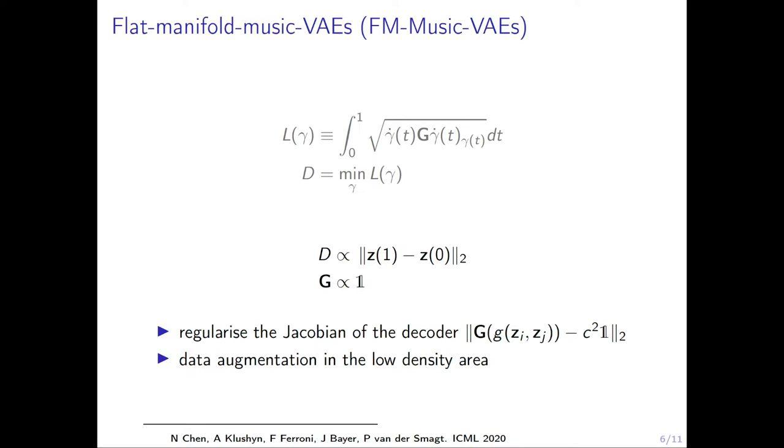How do we do the distance preserving? We add the regularizer into the loss of the VAE. So here is the regularizer. We have the metric tensor. And in practice, we regularize it to a scale of identity. C squared is a constant.